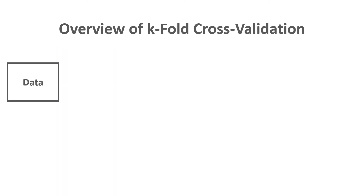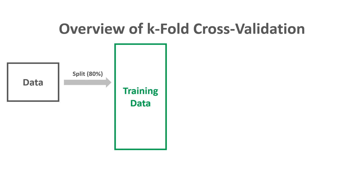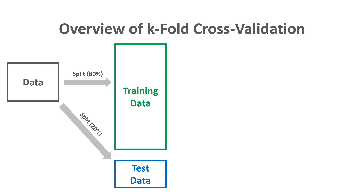Let's do a conceptual and visual overview of k-fold cross-validation. We start with our data, and conventionally take 80% of that data, randomly assigned to the training data, while the other 20% becomes the holdout or test data. This 80/20 split is conventional, but you could also do a 90/10 or 70/30 split. The important part is that random assignment is used from the original dataset.